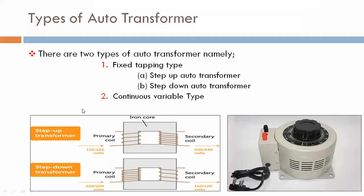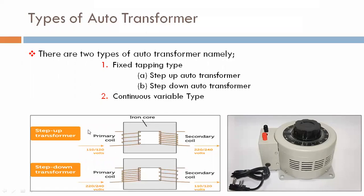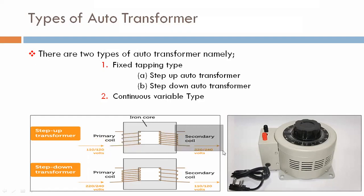Now, we are seeing in this figure the conventional transformer — step up transformer and step down transformer. There are two coils: primary coil and secondary coil, which we can call primary winding and secondary winding. That's a conventional transformer, also called a two-winding transformer. There is an iron core, and we are seeing the function of that.